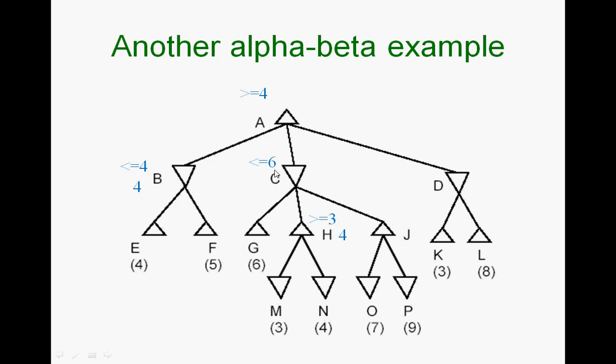At this point, C's current bound is less than or equal to 4. Now let's think about what's going on. You have less than or equal to 4 here. One of C's ancestors is A, which says greater than or equal to 4.